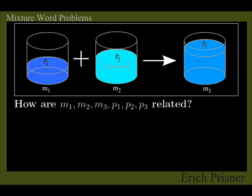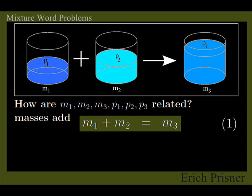How are these values related? Again, the mass is added, so we have M1 plus M2 equals M3, our first equation.